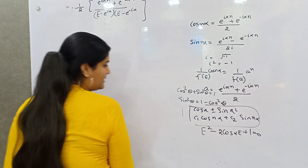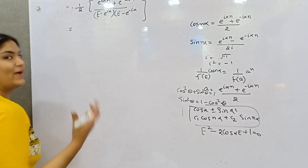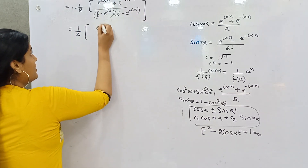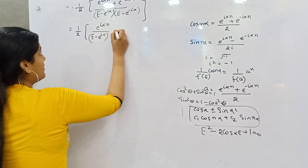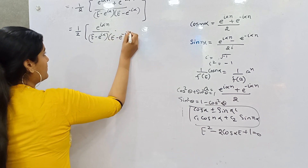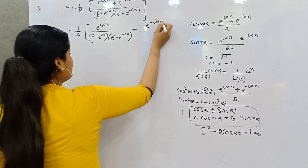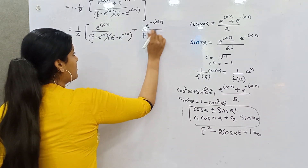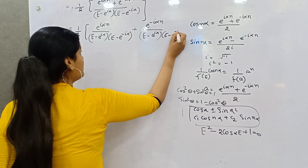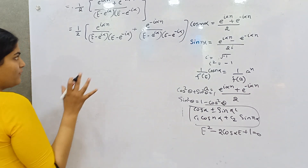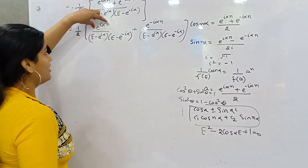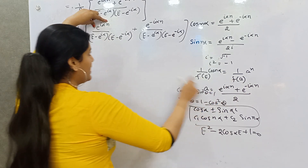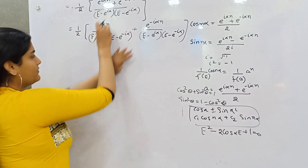This gives your particular integral. You can separate each part. You have terms of the form e^(iα) / (E - e^(iα)) and e^(-iα) / (E - e^(-iα)). These are in multiplication. Consider any one of these — it is in the form A^N / f(E).